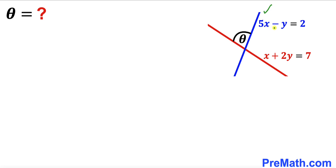5x minus y equals to 2, whereas this red line is being represented by the equation x plus 2y equals to 7. Now our task is to calculate the value of this angle theta, and keep in mind that